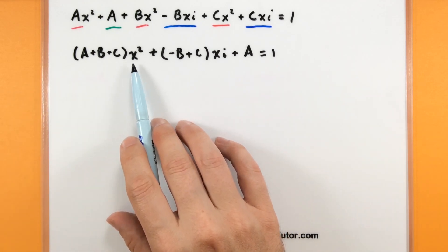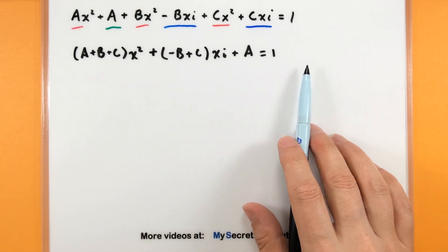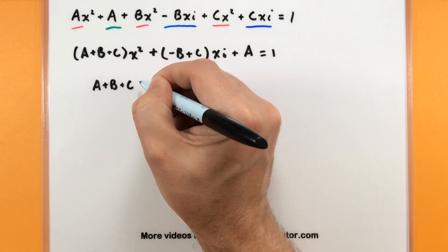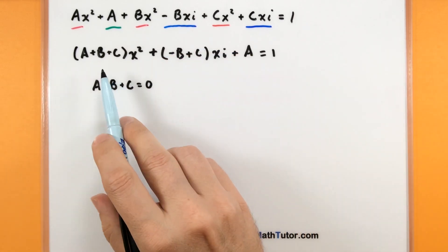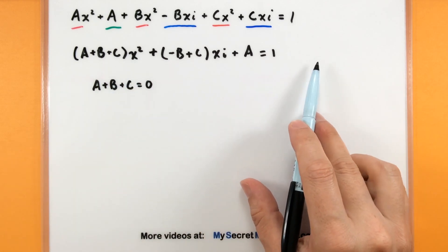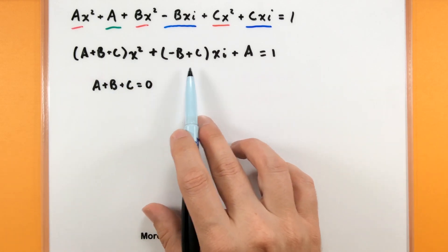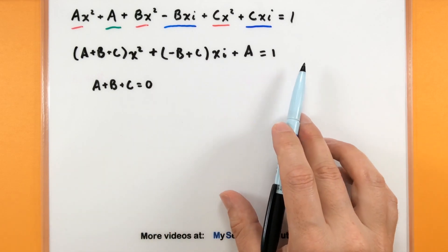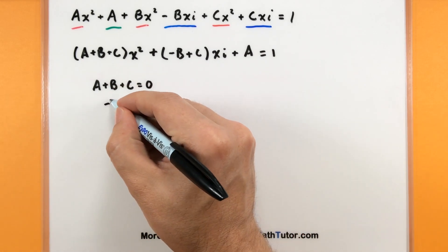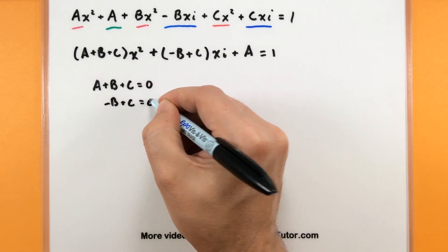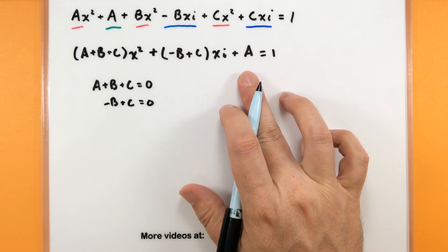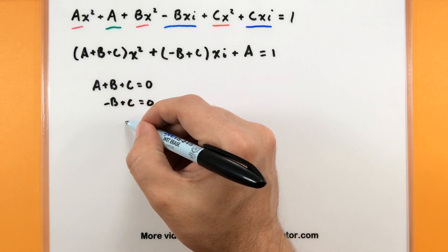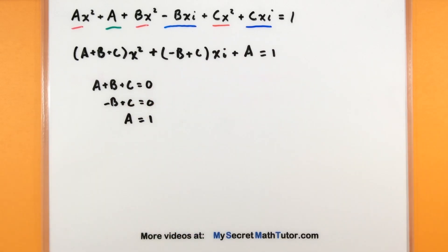And now we can make some really good comparisons. So looking at the left side, we see an x squared. On the right side, there is no x squared, which means all of these terms, the a, b, and c, all of those must combine and give us a value of zero. Same things happening with this negative b and c. They're associated with an xi, but there is no xi on the right. So negative b plus c, that must equal zero. And a is just some number. It's not associated with any x's. So that will equal our constant. On the other side, a is equal to one.